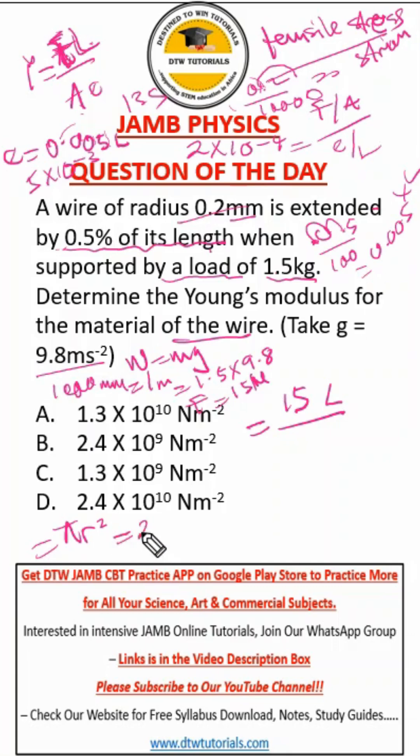So our area is 22 over 7 times R squared. R squared is our radius squared. So we have two times 10 to the power negative four all squared. So this would be this times this and this times this. So we have 22 over 7 times two squared times 10 to the power negative eight.